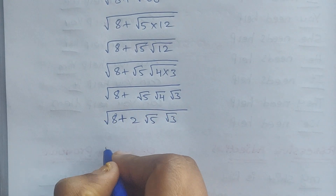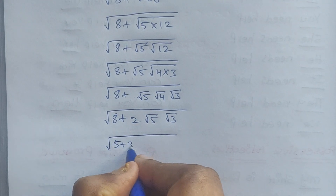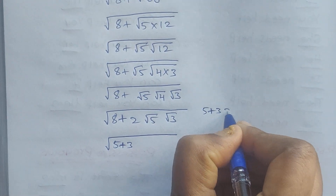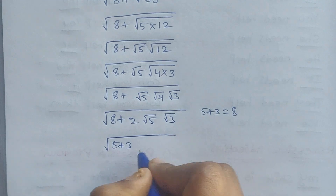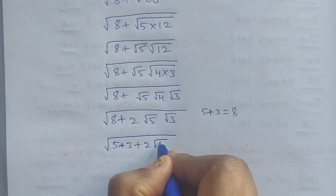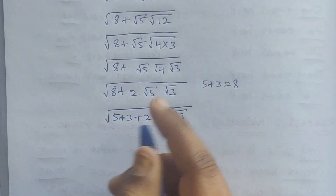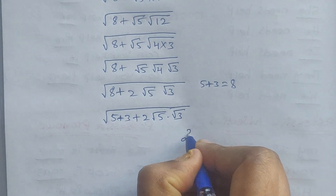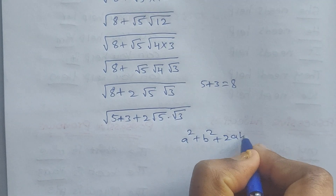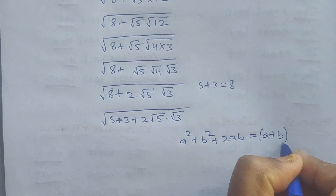Now 8 we can write as 5 plus 3. So if we add these two numbers we can write it as 5 plus 3 plus 2 times square root of 5 times square root of 3. This is the form of a squared plus b squared plus 2ab equal to a plus b whole square.